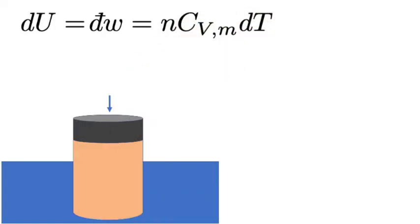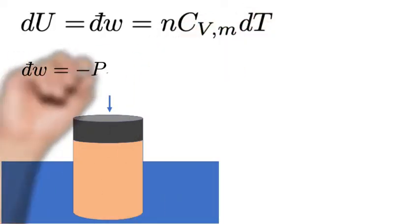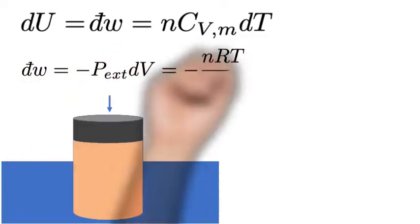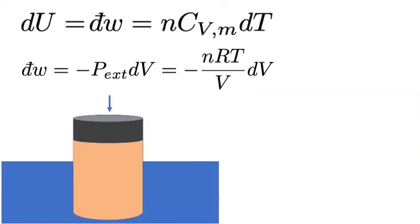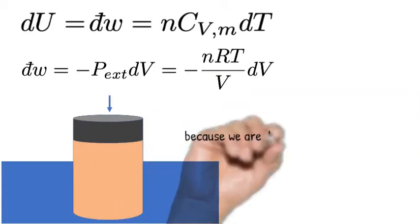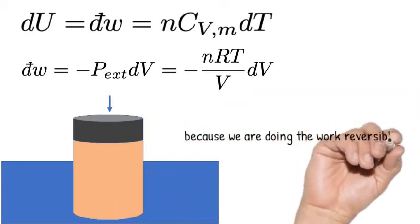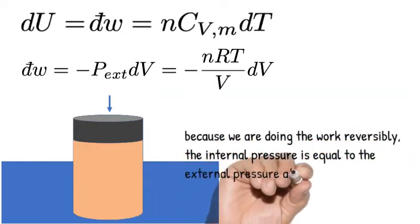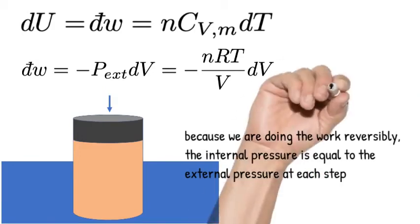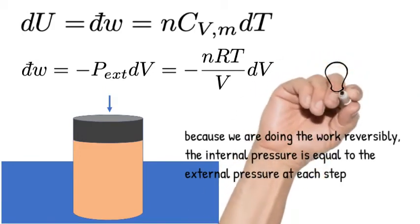We can write the incremental change in internal energy is equal to the incremental change in work, which is related to the incremental change in temperature through the heat capacity. Because we are doing this process reversibly, we can say that the internal pressure of the gas is always equal to the external pressure at each step of the compression.